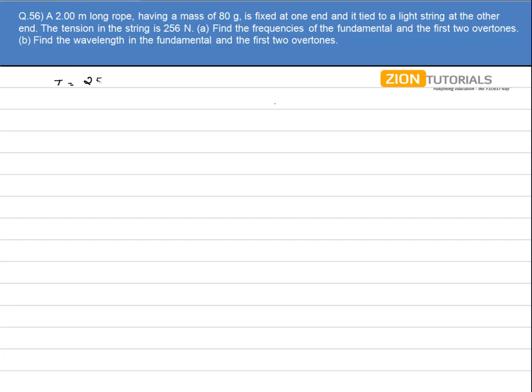So first of all, tension is given to me as 256 N and mu, that is mass per unit length, is 80 grams, that is 0.080 kg by 2 meter. So it comes out to be 0.04 kg per meter cube.